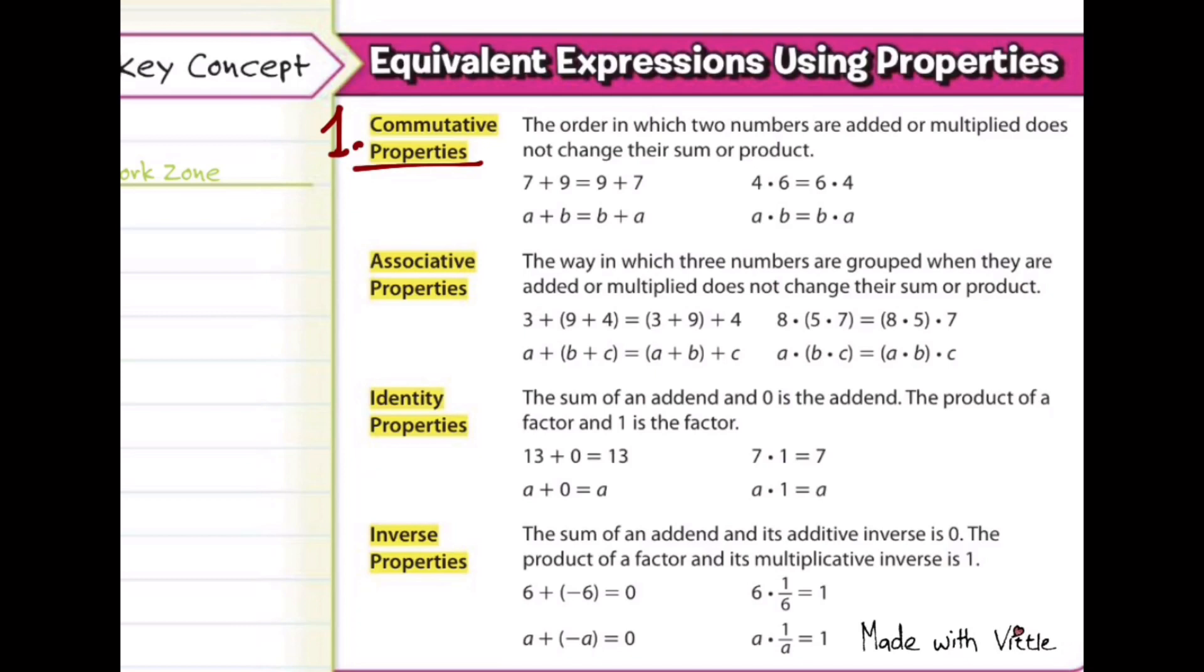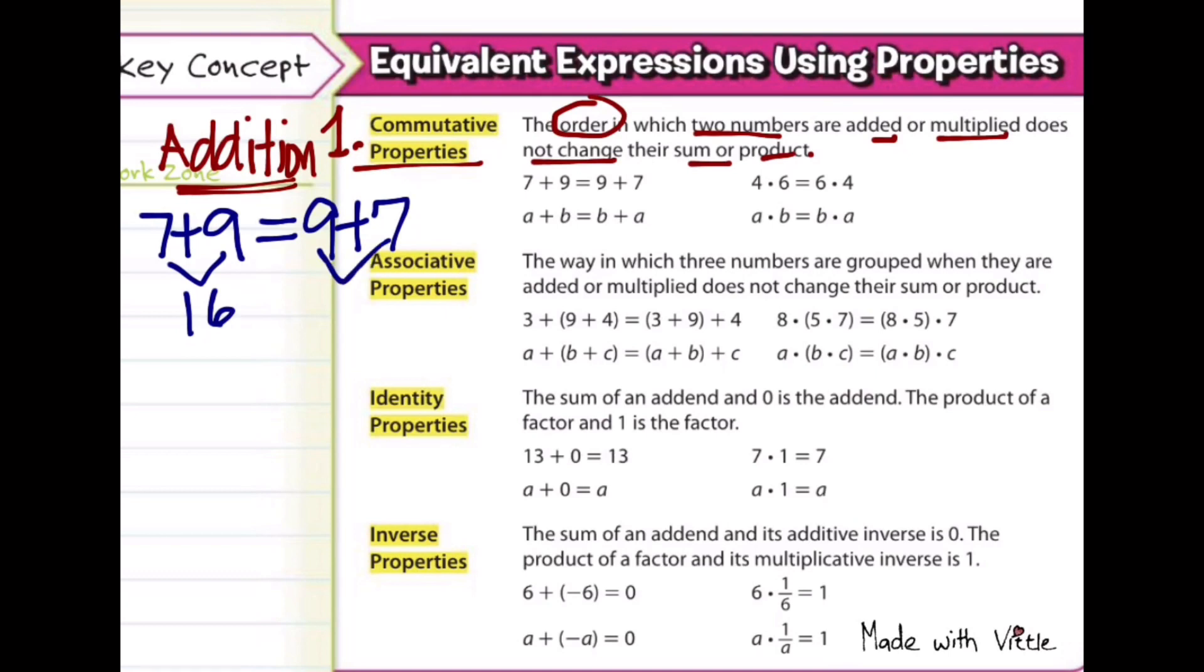So the first one is the commutative properties. The order in which two numbers are added or multiplied does not change the sum or product. So in addition, it means if you add 7 plus 9, that's still going to be the same as 9 plus 7. The order in which they are written doesn't matter because no matter what, 7 plus 9 is going to be 16 and 9 plus 7 is still going to be 16 because we're just adding them.